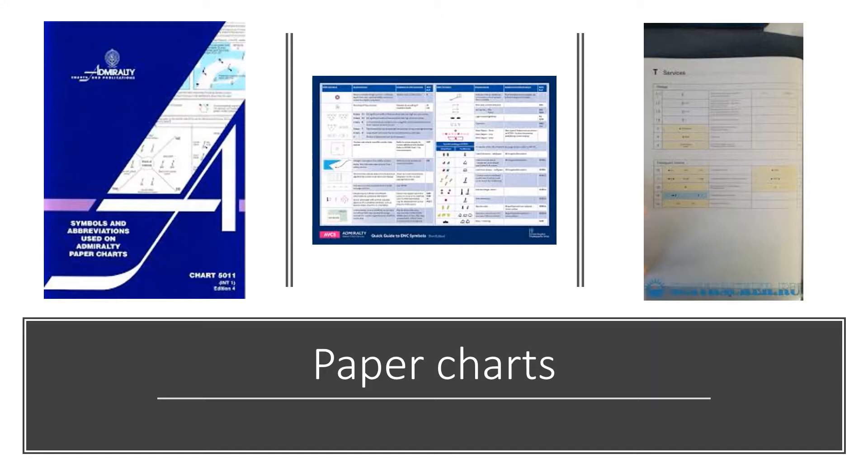Just like paper charts, you have the publication NP5011. NP stands for Nautical Publication. It's an Admiralty Nautical Publication and 5011 provides you with symbols and abbreviations used only on the Admiralty paper charts.